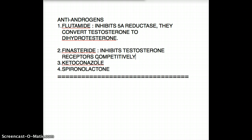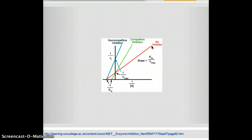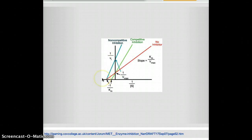Since finasteride acts competitively, let's review competitive versus non-competitive inhibition using a diagram. In competitive inhibition, KM increases while Vmax stays the same. You can remember: the competitive inhibitor moves on the x-axis and deals with KM. For non-competitive inhibition, Vmax changes — that moves on the y-axis.